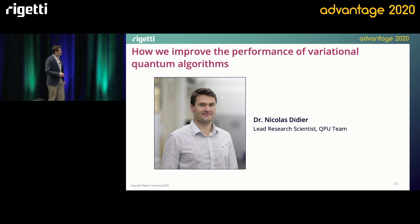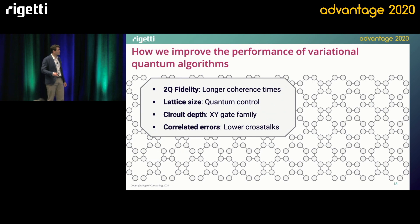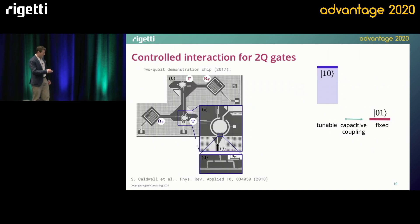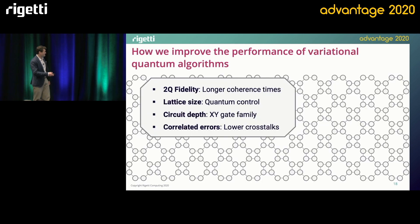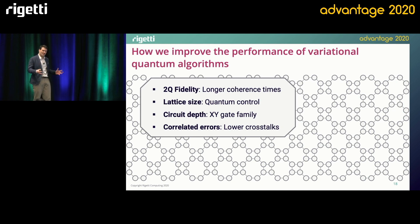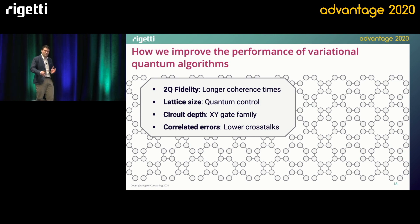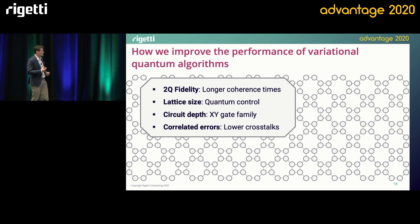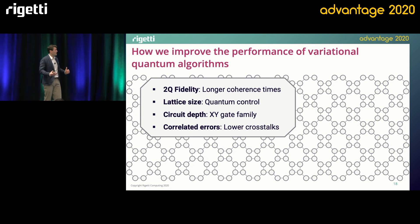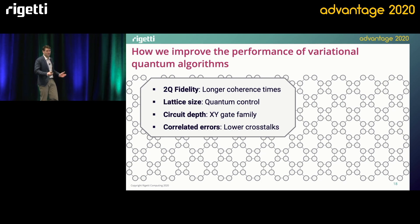Good morning, everyone. Today I'd like to tell you how at the hardware level we're improving the performance of the variational quantum algorithms you are running on our hardware. I'll focus on four topics: first, two-qubit fidelity; second, the size of the lattice of connected qubits; third, new gates available on QCS — the XY gate family; and finally, how we are reducing correlated errors by building architectures with low crosstalk.